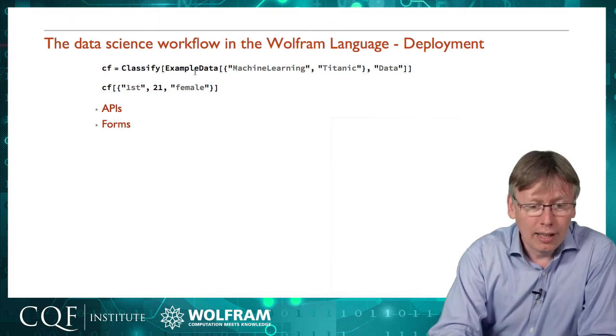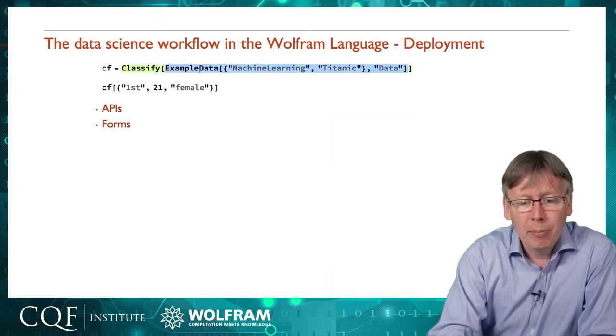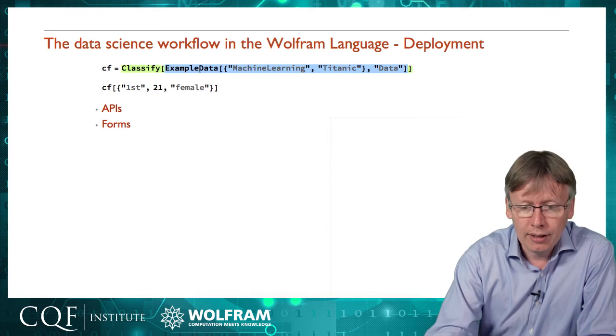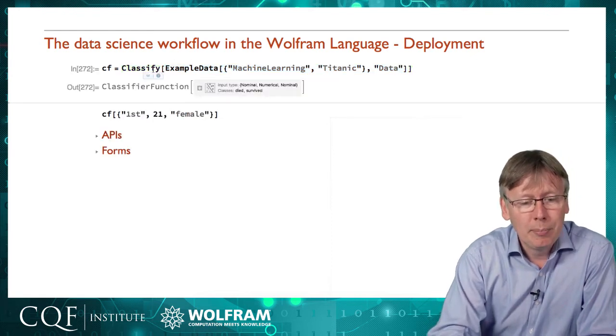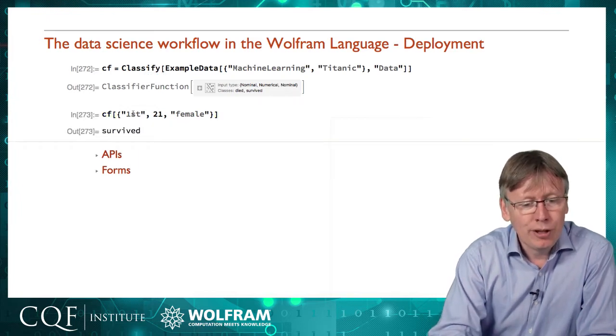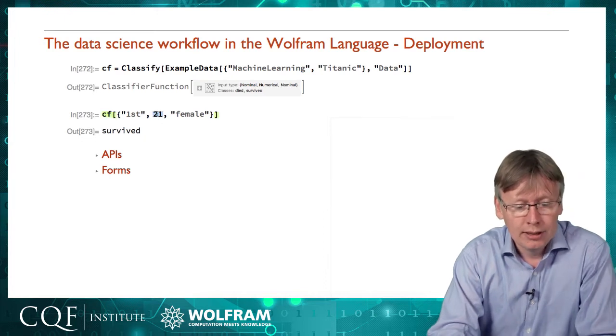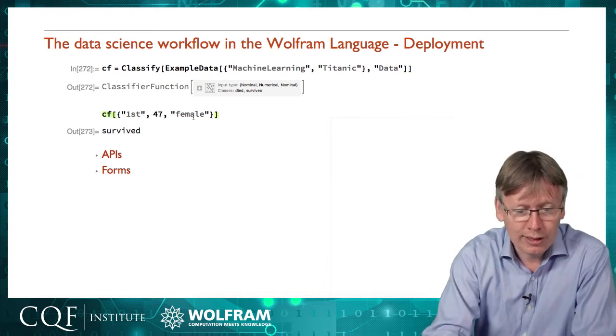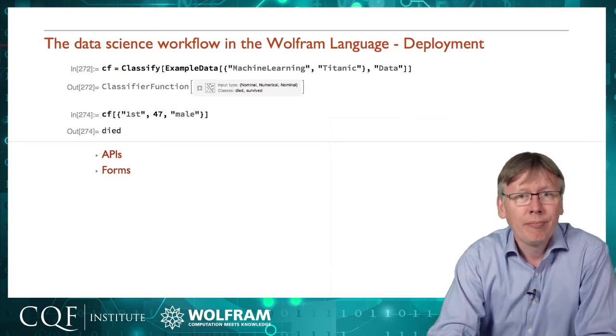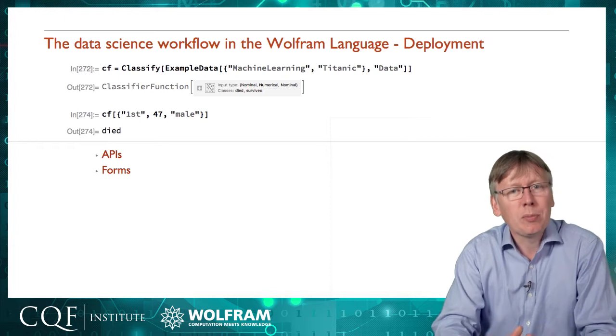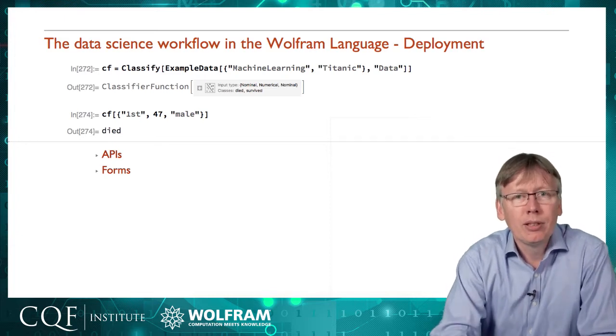So as an example, let's create another classifier model. This time, I'm going to take the survival, the manifest of the Titanic and who survived and who died. So I'm going to build a quick classifier function of that. And the idea is that I can take some data here and make a prediction about whether or not that passenger will have survived or died. So I would obviously travel first class and a male and so my prediction would be died. So I've got that ready to use, but I want to make it available for other people to be able to use it.